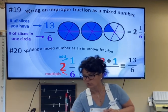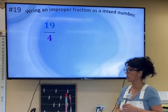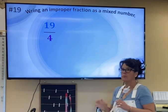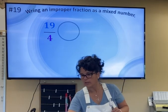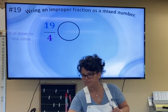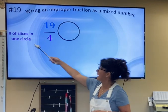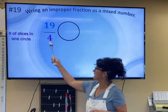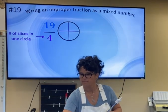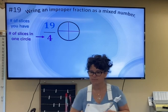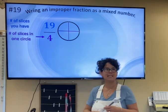Let's look at just one more example: 19 over 4. If we want to start off by making a picture of what's going on, every circle is going to have four slices in it, and we have 19 slices.